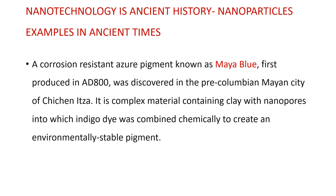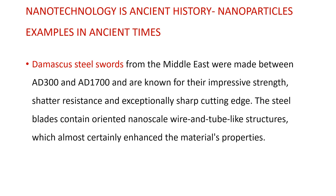Another example of nanoparticles used in ancient times is a corrosion-resistant azure pigment known as Maya blue, first produced in AD 800, discovered in the pre-Columbian Mayan city of Chichen Itza. It is a complex material containing clay with nanopores into which indigo dye was combined chemically to create an environmentally stable pigment.